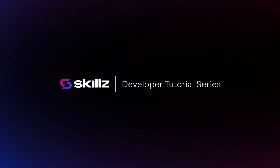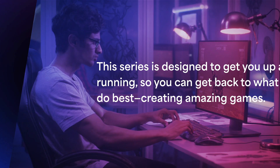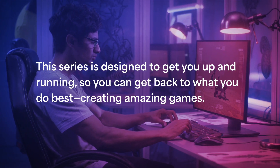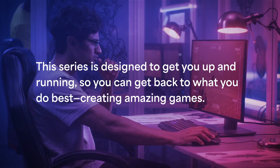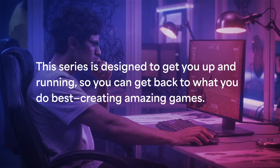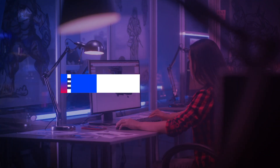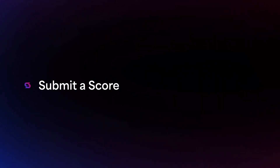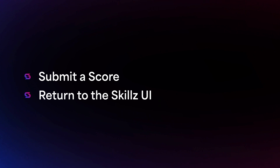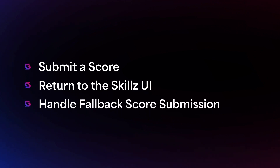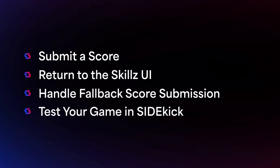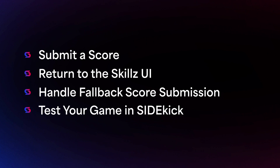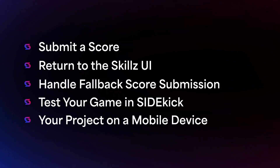Welcome to the Skills Developer tutorial series, a step-by-step video series designed to get you up and running so you can get back to what you do best — creating amazing games. In this video, you'll set up the core loop of your skills game. You'll learn to submit a score in your game, return to the skills UI, and handle fallback score submission. You'll also learn how to run your project in Unity where you'll be able to test your game and see what it looks like on a mobile device.